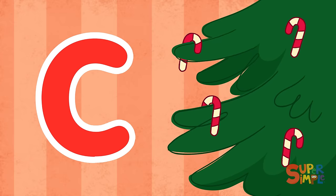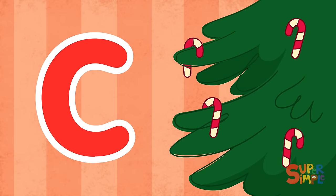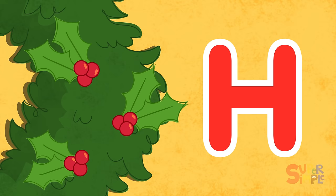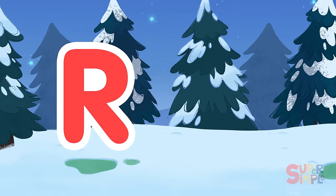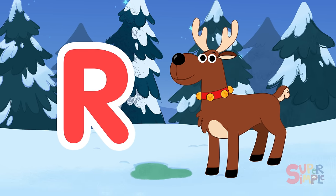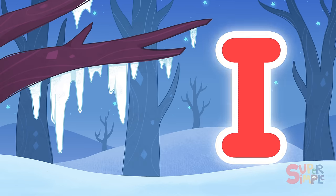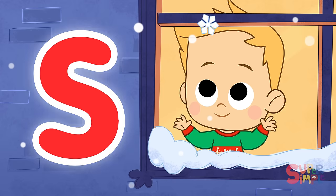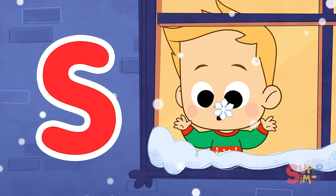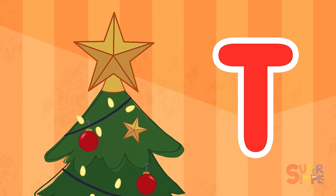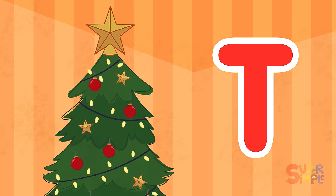C is for candy canes, H is for holly, R is for the reindeer. I is for icicles, S is for snow, T is for the tree.